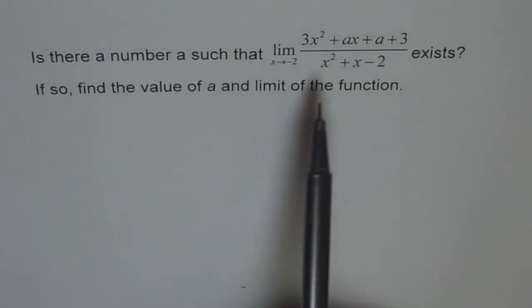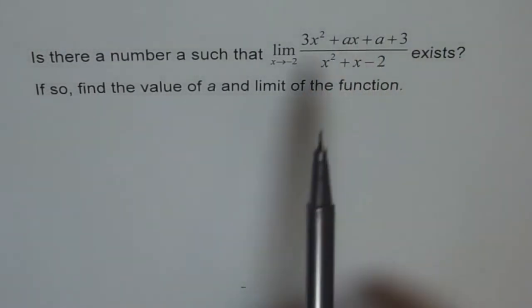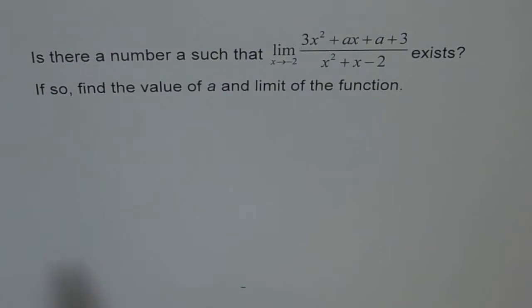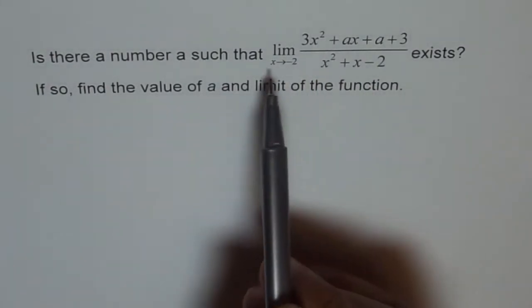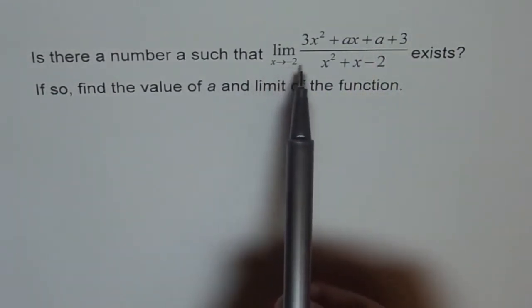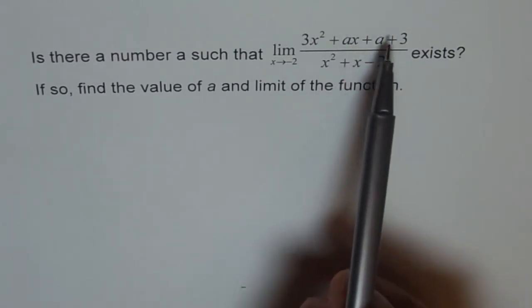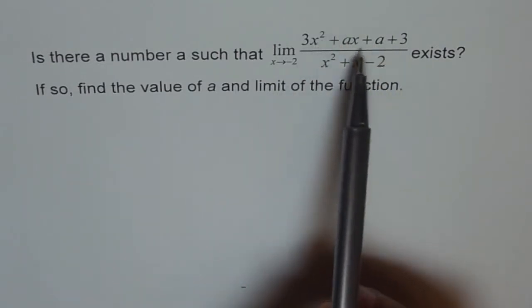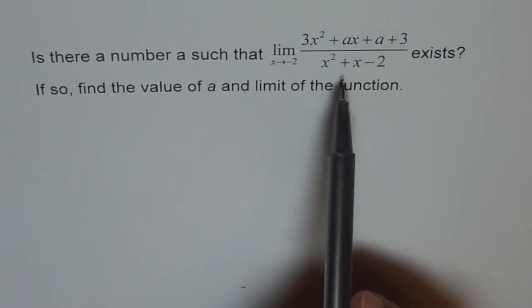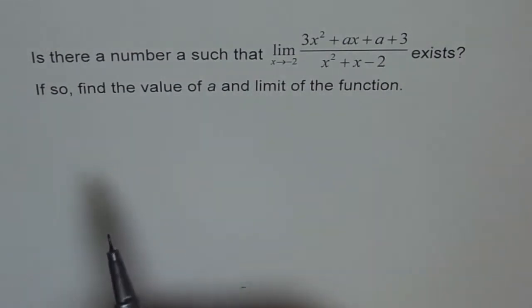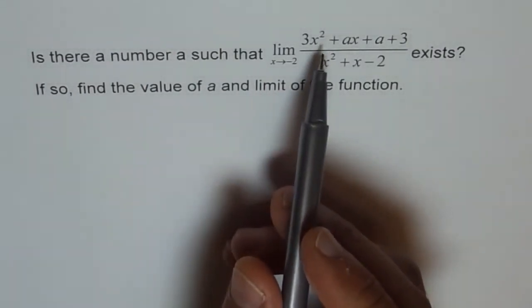The limit can exist only if we have a factor in the numerator which contains minus 2 — specifically (x + 2) as a factor. So if the denominator is 0 because x is approaching minus 2, the numerator should also be 0 when x equals minus 2. In that case, we have a 0/0 situation, and then if we factor the numerator, the factor making it 0 will get cancelled out, and then we will have a limit as x approaches minus 2.